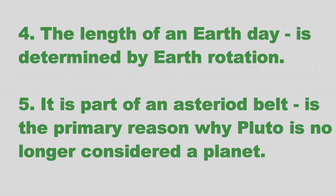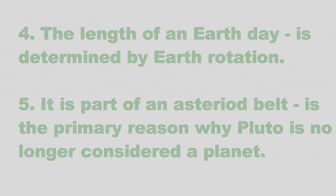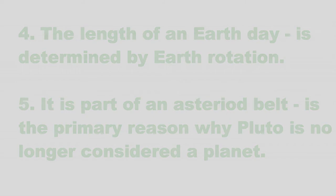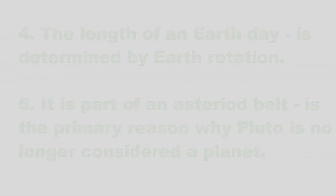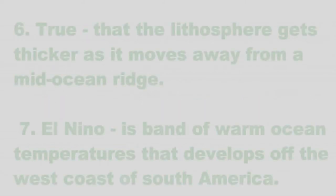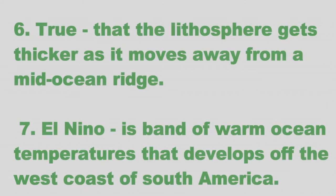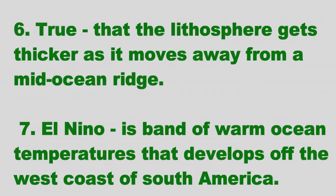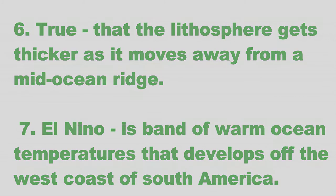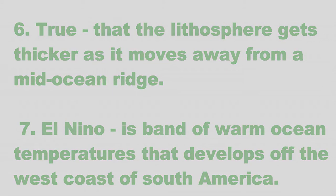Six: true that the oceanic crust gets thicker as it moves away from the mid-ocean ridges. Seven: El Niño is a band of warm ocean temperatures that develops off the west coast of South America.